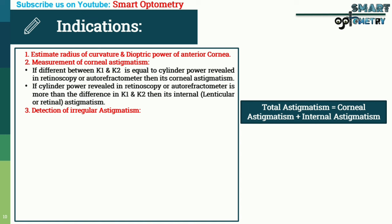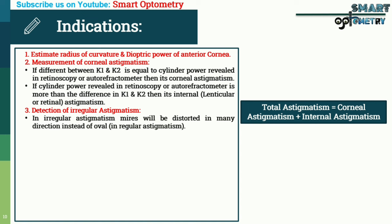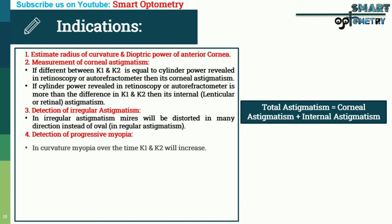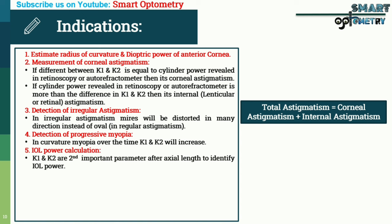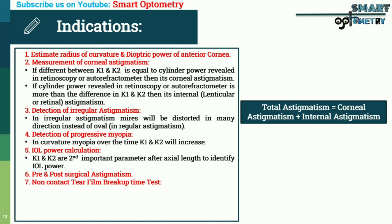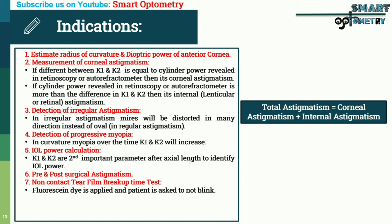(3) Detection of irregular astigmatism — in irregular astigmatism, mires will be distorted in many directions instead of oval, which is seen in regular astigmatism. (4) Detection of progressive myopia — in curvature progressive myopia, K1 and K2 will increase over time. (5) IOL power calculation — K1 and K2 are the second most important parameters after axial length for IOL power calculation. (6) Pre and post-surgical astigmatism assessment. (7) Non-contact tear film breakup time test — fluorescent dye is applied and the patient is asked not to blink; with the break of tear film, mires get distorted, marking the breakpoint. A breakpoint less than 10 seconds is considered dry eye suspect.